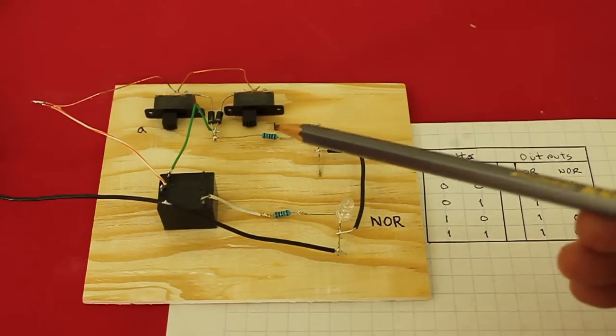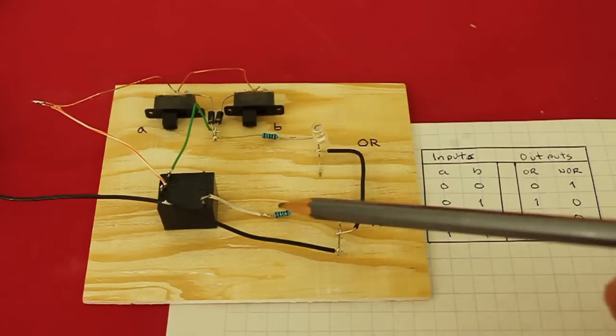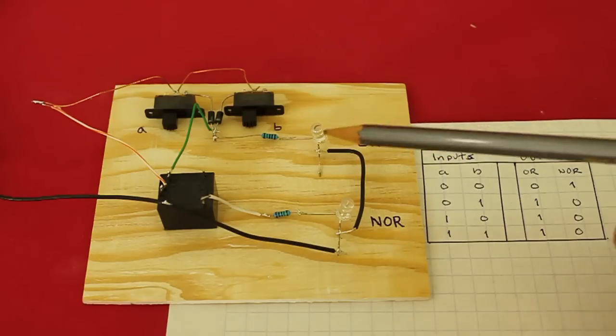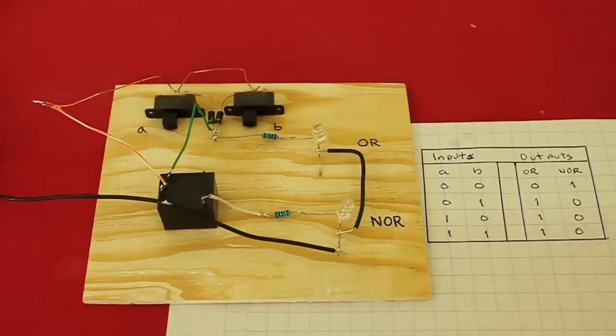Each one with its resistor to limit the current. This is not in the diagram, but as we know, it's necessary every time we use an LED. And here we have the two diodes.